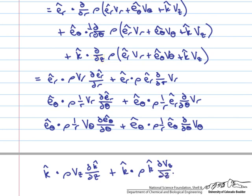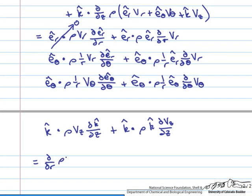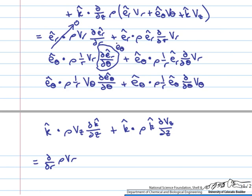Now let's evaluate these dot products. The term ê_r dot (ρ · v_r · ê_θ) — this dot product is equal to zero. For the next term, ê_r dot ê_r equals 1, so we are left with ∂/∂r of (ρ · v_r). Next, using the hint that ∂ê_r/∂θ equals ê_θ, when we evaluate this dot product, ê_θ dot ê_θ equals 1, and we are left with ρ · v_r / r.